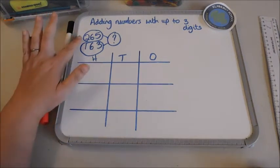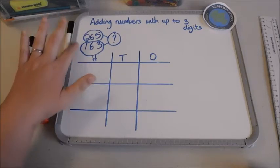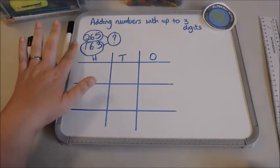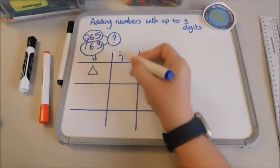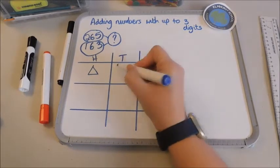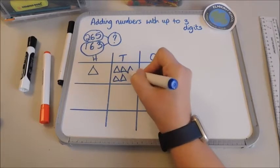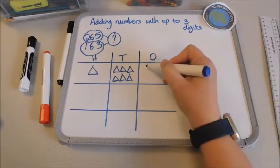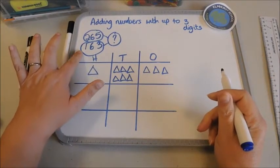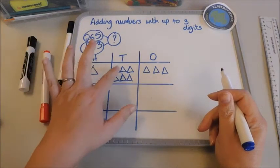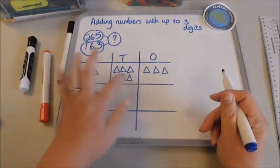Because we're adding, I can do these numbers either way around. I'm going to draw 163 first. I've got 100 so I'm going to put my 100 in, and then I've got 60 so that's six tens, and then I've got three ones. It's really important that you always get your children to double check.